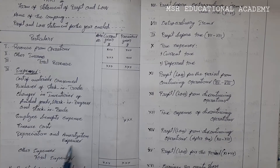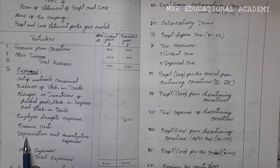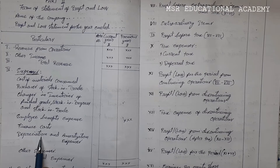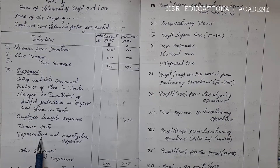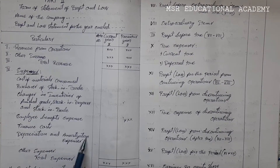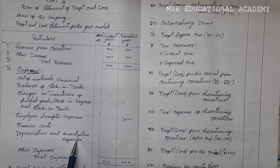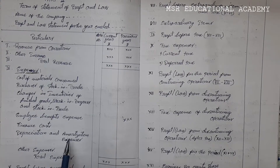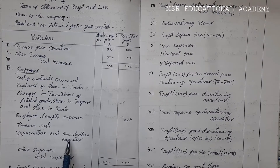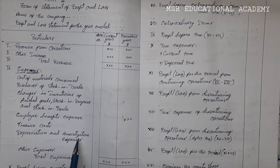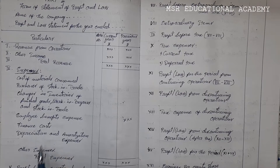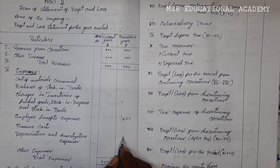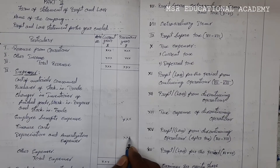Next is depreciation and amortization expenses. Depreciation is calculated on fixed assets — that is the decreasing value of fixed assets. Amortization is calculated on intangible assets — decreasing of intangible assets is called amortization. Finally, we should add both amounts, and that combined figure is called depreciation and amortization expenses.